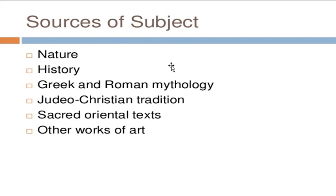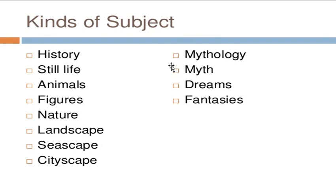The different kinds of subjects are varied: history, still life, animals, figures, nature, landscape, seascape, cityscape, mythology, myth, dreams, and fantasy.